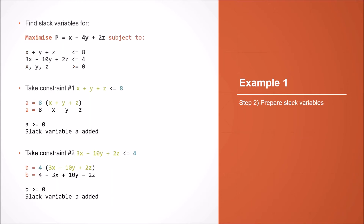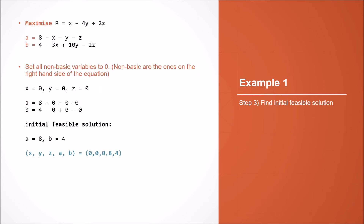We can now prepare our slack variables — one for each inequality. We get slack variable a by taking the right-hand side value 8 and subtracting from it x plus y plus z, and similarly we get slack variable b in the same way. We find our initial feasible solution by setting all non-basic variables — those on the right-hand side — to zero, giving us a equals 8 and b equals 4, with x, y, z equalling 0.